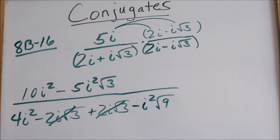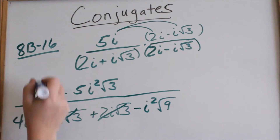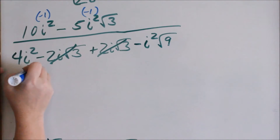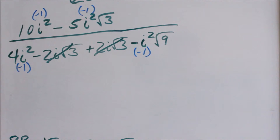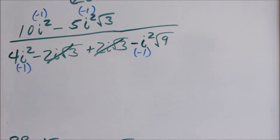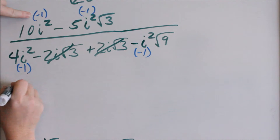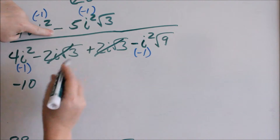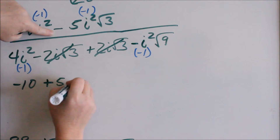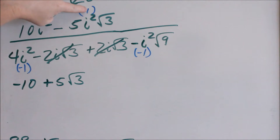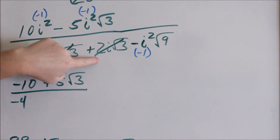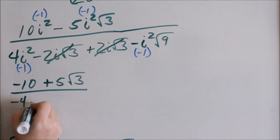Those middle terms cancel. Now everywhere we see an i squared, we are putting a negative 1. So let's rewrite this: 10 times negative 1 is negative 10. This makes the whole thing negative, and then we have a negative times negative 1, which becomes a positive 5 square root of 3. Negative 5 times negative 1 is positive 5. That's our numerator. In the denominator: 4 times negative 1 is negative 4. Those middle terms cancel. Square root of 9 is just 3. That negative i squared got replaced with negative 1.